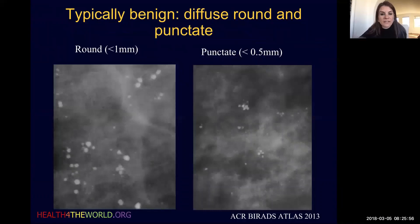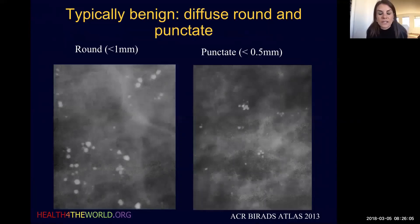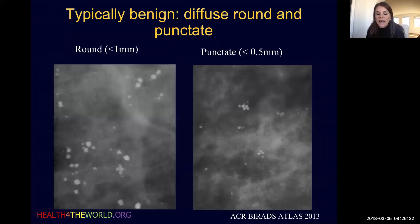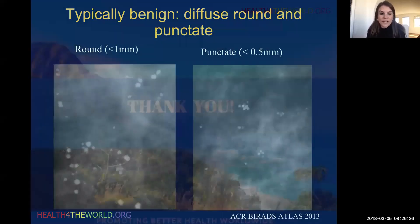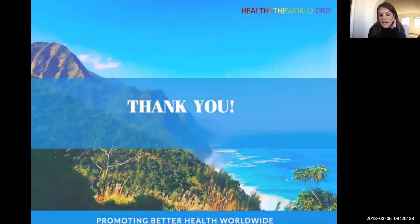The last type of calcification listed in the characteristically benign category is diffuse round and punctate. Round calcifications are perfectly round — you can draw a circle right around them with nice borders — and are less than a millimeter. Punctate is a subset of round: just smaller, less than half a millimeter. Diffuse round and punctate calcifications may be dismissed as benign. Thank you for your attention reviewing this module.